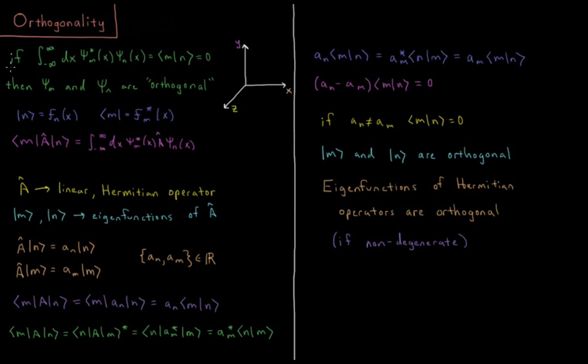Okay, so let's start off. If the integral over all space, from minus infinity to infinity in one dimension, of ψ*_m(x) times ψ_n(x), which in Dirac notation is this bracket ⟨m|n⟩, if that is equal to zero, then ψ_m and ψ_n are said to be orthogonal.